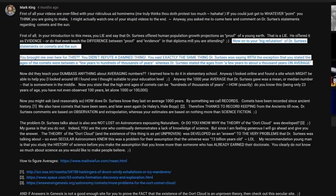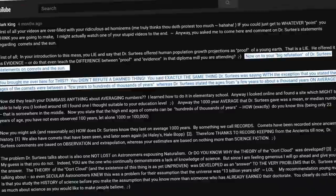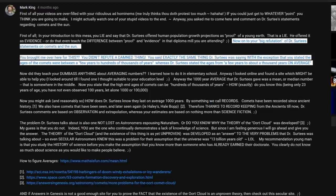Now, onto your big refutation of Dr. Surtees' statements on comets and the sun. You brought me over here for this? You didn't refute a damn thing! You said exactly the same thing Dr. Surtees was saying, with the exception that you stated the ages of the comets were between a few years to hundreds of thousands of years, whereas Dr. Surtees stated the ages from a few years to about a thousand years on average!